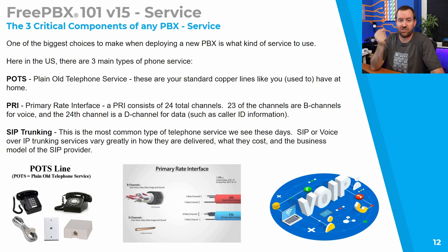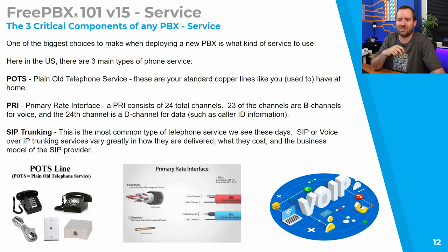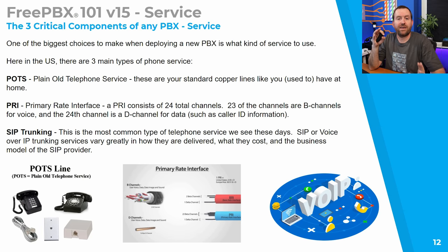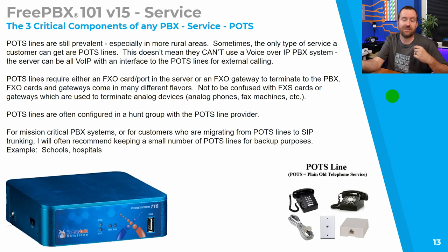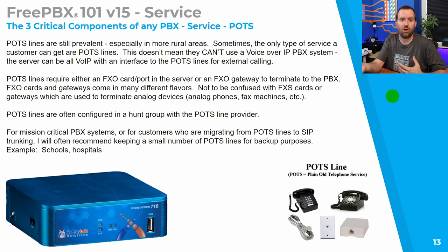These days, especially with FreePBX, most of our clients are going with SIP trunking. But here in the US there are essentially three main types of PSTN connectivity. POTS lines — plain old telephone service — are just your standard copper line. Then we have PRI, another type of circuit that's essentially 23 phone lines in one cable. Then we have SIP trunking, which today is hands down the most common type of service. We still see POTS in more rural areas or where internet service isn't good enough for voice over IP, or where a wireless ISP's latency variations could result in bad call quality.